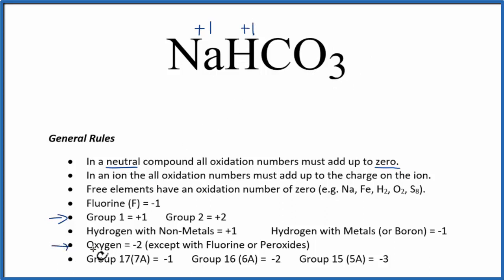Going down, oxygen is minus 2 with a few exceptions, so each oxygen is going to be minus 2. We don't know the carbon though, so we can set up an equation to find the oxidation number of the carbon.